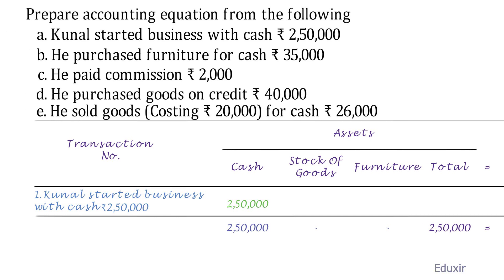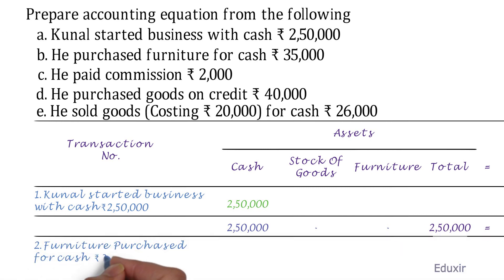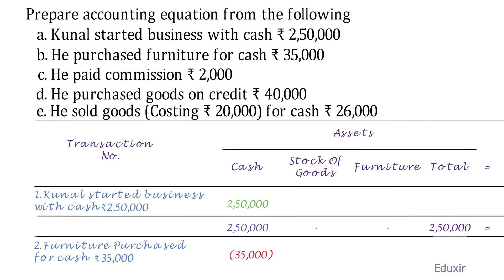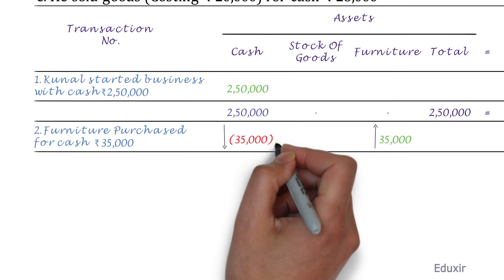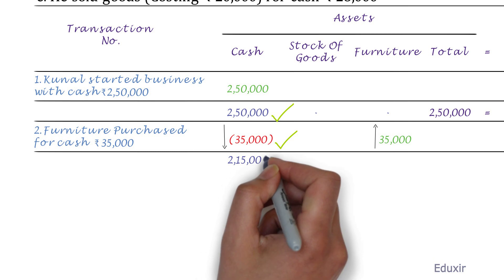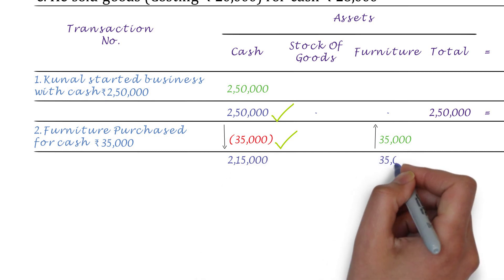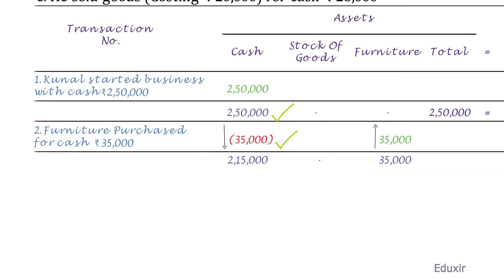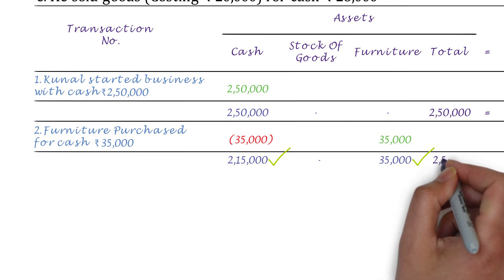The second transaction is: He purchased furniture for cash ₹35,000. Because the furniture is purchased using cash, this transaction decreases the cash asset by ₹35,000 and increases the furniture by ₹35,000. There is no change in liabilities or capital — this is just a decrease in one asset and increase in the other. Subtracting ₹35,000 from ₹2,50,000, the business will have ₹2,15,000 of cash and furniture worth ₹35,000. No stock of goods yet.